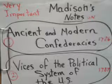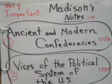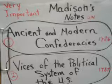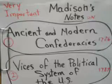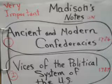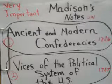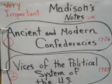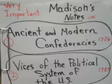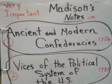"The States General have authority to enter into treaties and alliances, to make war and peace, to raise armies and equip fleets, to ascertain quotas and demand contributions. In all these cases, however, unanimity and the sanction of their constituents are requisite." Remember, unanimity means every member had to accept and agree — if one member did not, then the deal would not work.